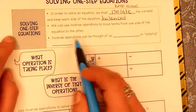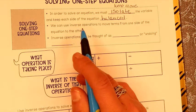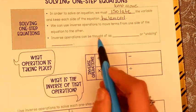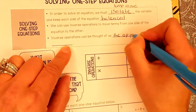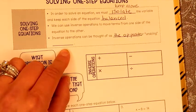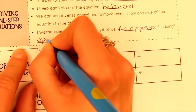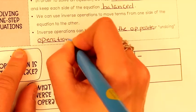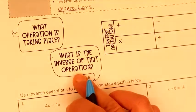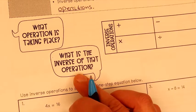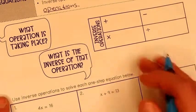We can use the inverse operation to move terms from one side of the equation to the other. Inverse operations can be thought of as the opposite, or undoing operation. What operation is taking place? What is the inverse of that operation? I do not like this font, I think it's very hard to read. Do you guys agree?